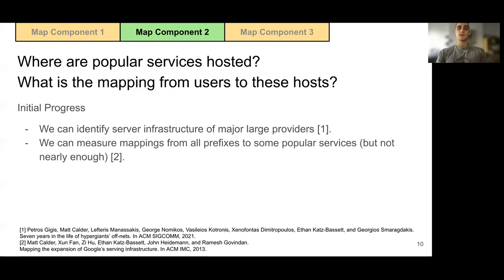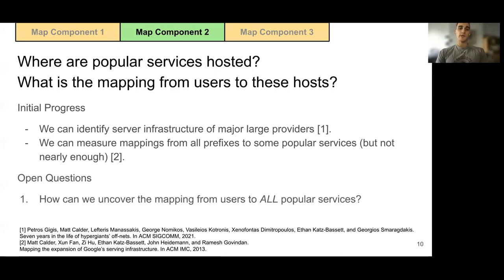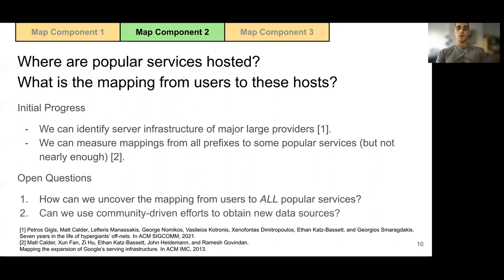Some open problems are: first, we need to figure out how to uncover the mapping from users to all popular services, including services that use anycast and URL-based redirection. And towards this goal, one question is: can we use community-driven efforts to obtain new data sources? As one direction, we envision working with academic institutions to install and study CDN caches in our own university networks.